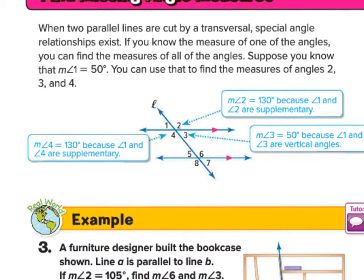Before moving on, stop and reflect: knowing that corresponding angles are equal and angle one is 50, could you solve for angle five? They're both acute angles with the same parallel line and transversal — they are corresponding angles. So if angle one is 50, angle five must also be 50. Notice how you're solving for every angle by only knowing one.